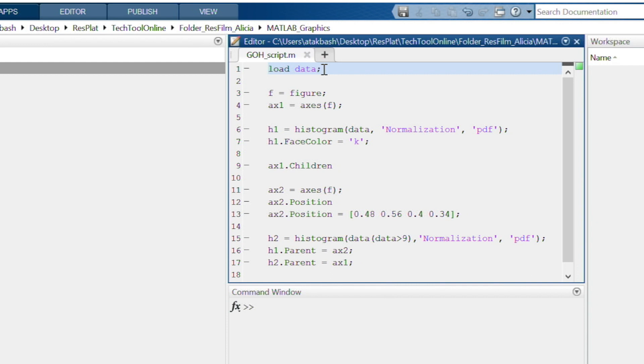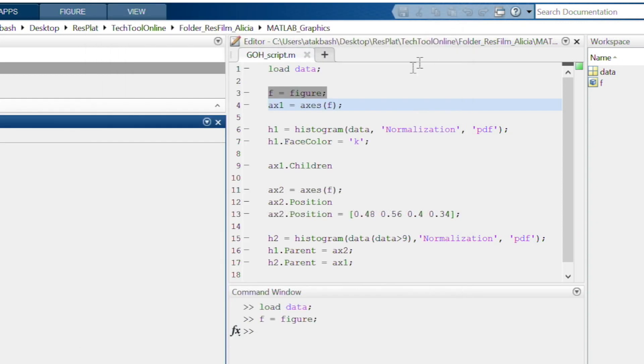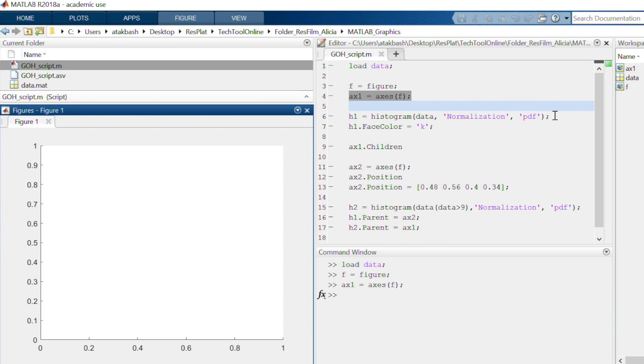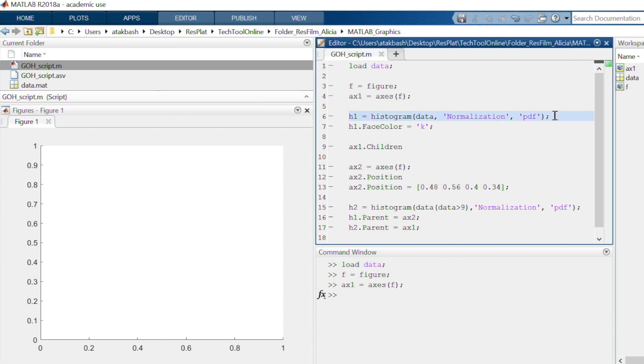I start with loading my wave height data. Then, I create a figure window object and assign it to a handle f. Now, I use this handle and the function axis to create an axis object in f with the handle x1. Then, I plot a histogram of my data into this axis and assign the plot to the handle h1.